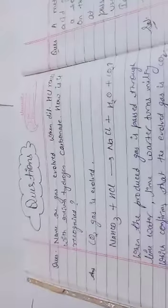The first question is: name the gas evolved when dilute HCl reacts with sodium hydrogen carbonate. How is it recognized? Recall your memory. Whenever sodium carbonate or bicarbonate is treated with dilute acid, it gives salt plus water plus CO2 gas is evolved. So CO2 gas is evolved.